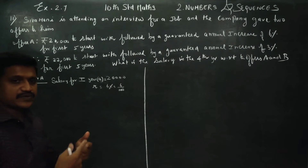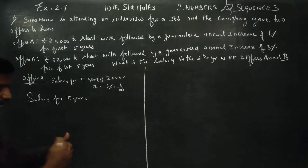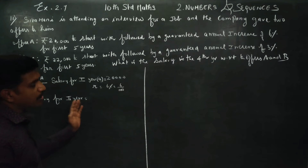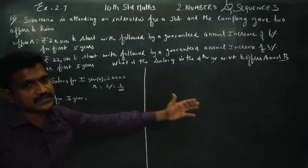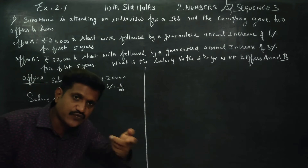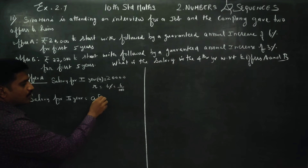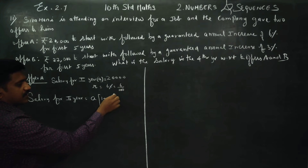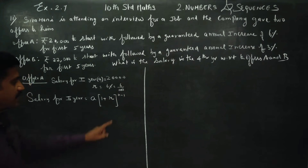The salary for the second year — we will use a shortcut formula. The formula is: a into (1 + R) to the power (n minus 1), where R is 6 by 100. For the second year, n minus 1 is 2 minus 1 equals 1; for the third year, 3 minus 1 equals 2; for the fourth year, 4 minus 1 equals 3.